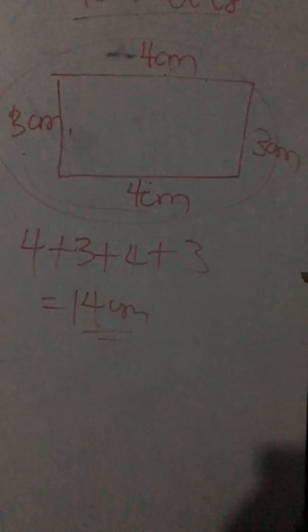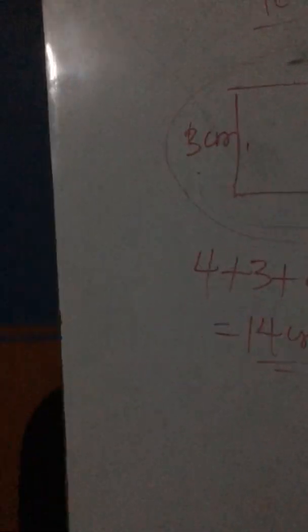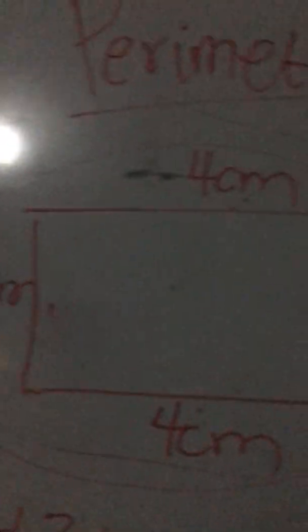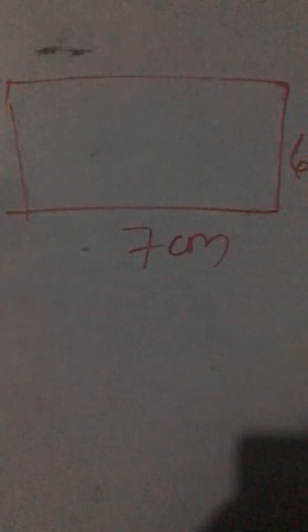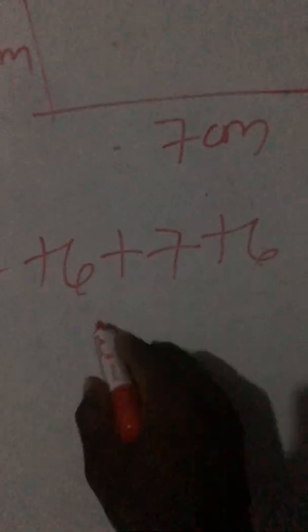Let's look at another example. If we have a rectangle with one side as seven and another as six, opposite sides are equal — so the top is also seven and the other side is also six. To find the perimeter, you add everything around it: seven plus six plus seven plus six, which gives you 26 centimeters.